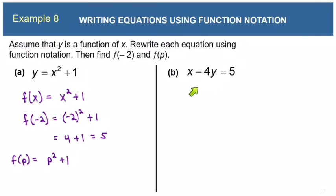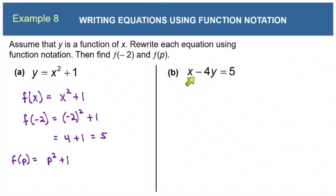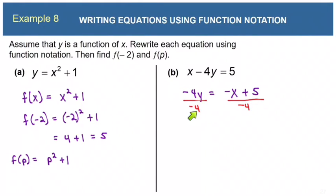Part B is not as simple. We have x minus 4y equals 5. To write this in function notation, we first solve for y, then replace y with f of x. Moving x to the right side and dividing each term by negative 4, the negative 4s cancel on the left. We get negative x plus 5 over negative 4, which is awkward, so we multiply the top and bottom by negative 1.